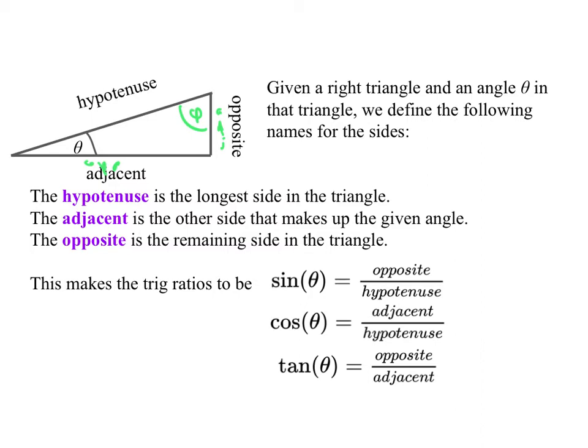And then the trig functions turn out to be, historically, that the opposite divided by the hypotenuse is the sine of the angle. The adjacent divided by the hypotenuse is the cosine. And the opposite divided by the adjacent turns out to be the tangent. So notice the tangent is actually just sine over cosine because the hypotenuse would cancel out there. There's not much more to say than these are the historical names and you sort of need to know them.